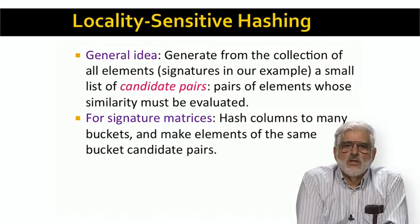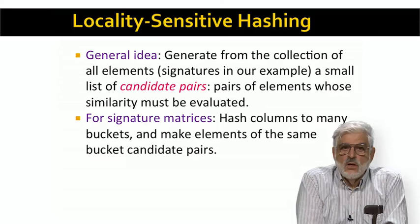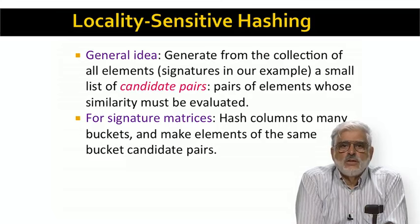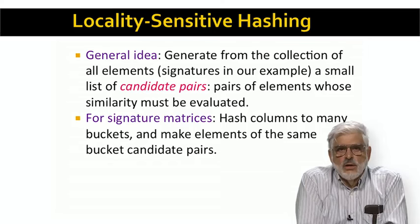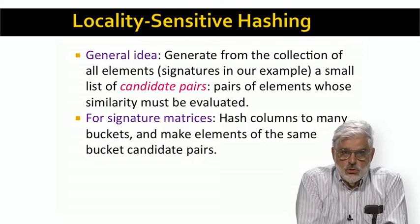For signature matrices, we perform LSH by creating some large number of hash functions — ordinary hash functions, not minhash functions. For each selected hash function, we hash columns to buckets. For each bucket, we make all pairs within that bucket a candidate pair. A pair becomes a candidate pair if any one or more of the hash functions puts both signatures in the same bucket.